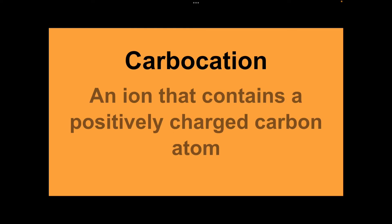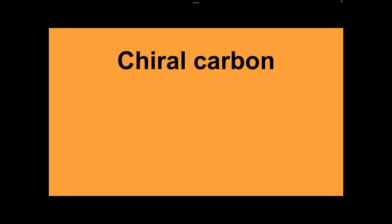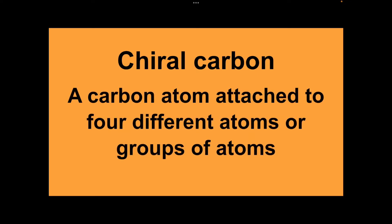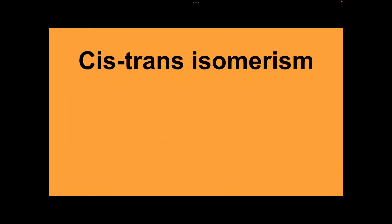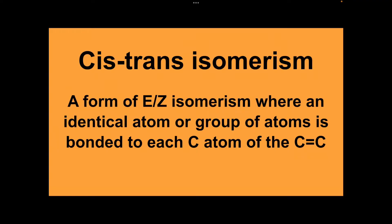Carbocation: an ion that contains a positively charged carbon atom. Chiral carbon: a carbon atom attached to four different atoms or groups of atoms. Cis-trans isomerism: a form of EZ isomerism where an identical atom or group of atoms is bonded to each carbon of the C=C double bond.